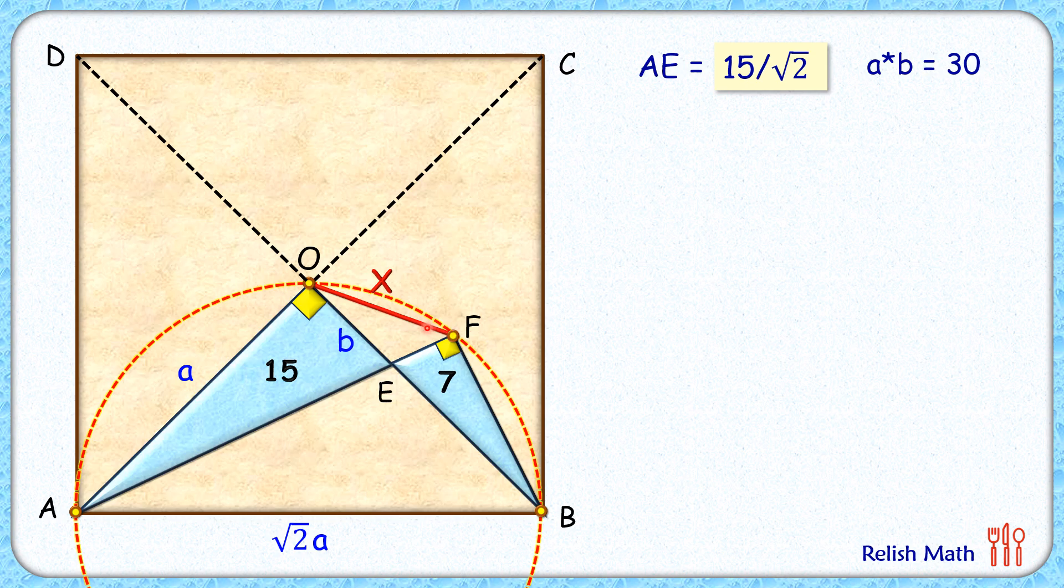In this circle, BF is a chord which is sustaining angle O at the circumference. By theorem, this BF chord will sustain the same angle in the remaining part of the segment, so this angle A will also be the same degrees. These two triangles, triangle OEF and triangle AEB, have these pink angles as equal, and angle E, they are vertically opposite angles so they will be equal. By angle-angle similarity, we can say both triangles are similar to each other.